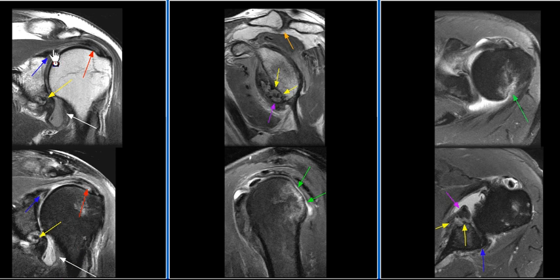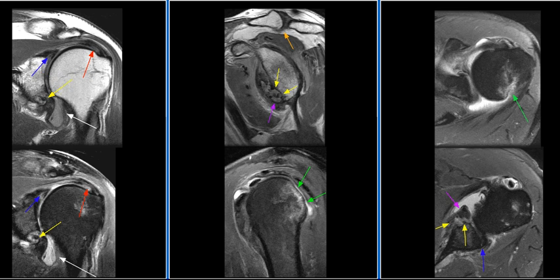The labrum is abnormal, including an extensive tear of the anterior labrum, a SLAP tear of the superior labrum, and fraying of the posterior labrum.